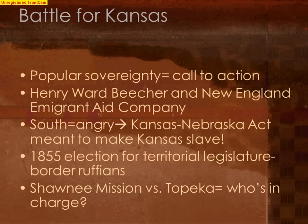This movement angered the South, because they felt they had had an unspoken agreement with the Kansas-Nebraska Act — that even though popular sovereignty would apply in both regions, Kansas was obviously supposed to go for slavery. Now they felt betrayed, with free soilers moving out there and attempting to make Kansas a free soil territory.